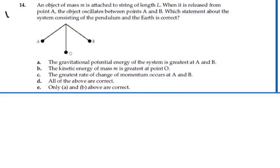Here's problem 1514. An object of mass M is attached to a string of length L. When it is released from point A, the object oscillates between points A and B. Which statement about the system consisting of the pendulum and the earth is correct? Let's look at our statements.